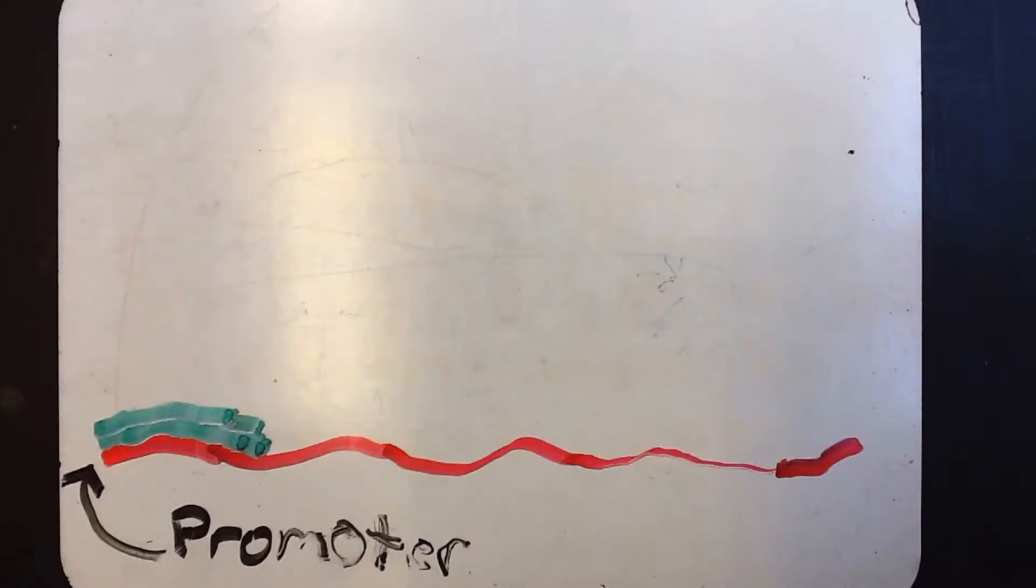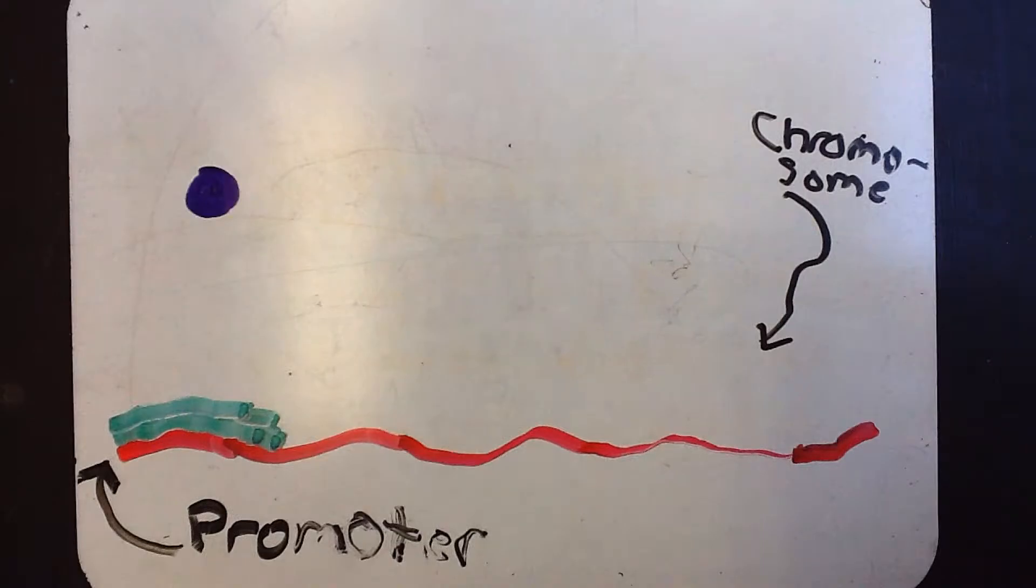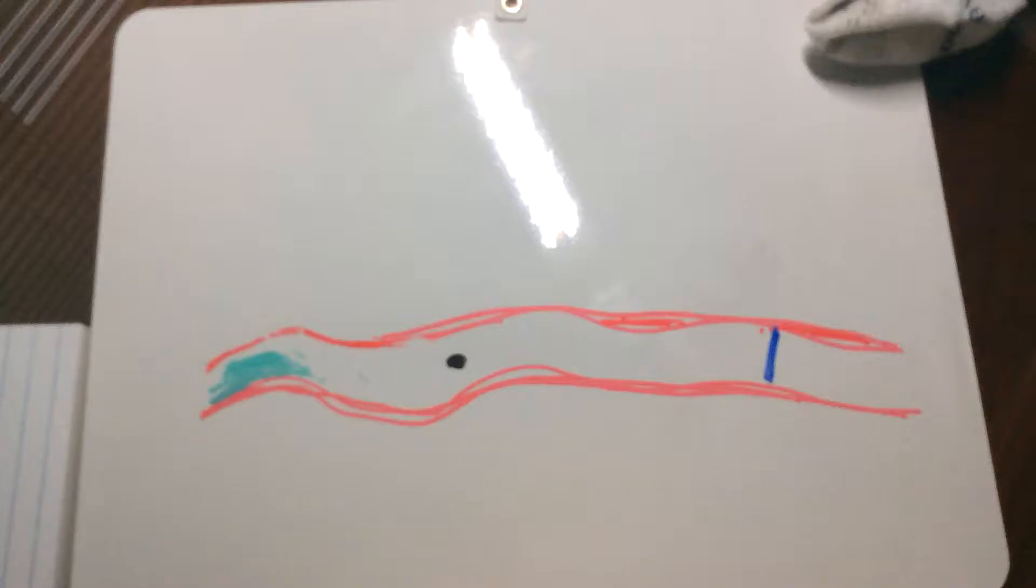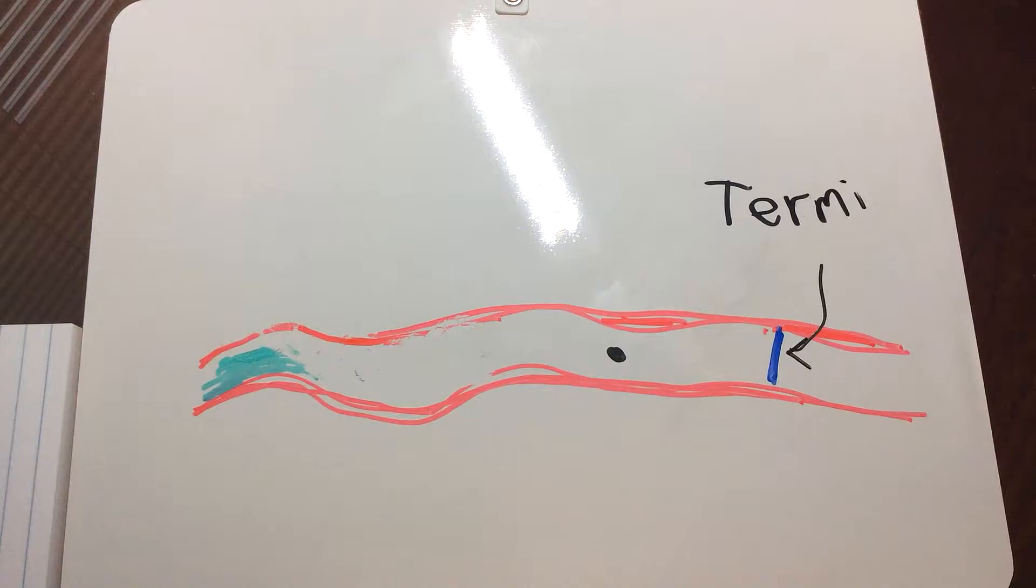Then RNA polymerase connects to the promoter on the chromosome. After that, mRNA nucleotides into the structural gene as a template and are added on by the base pair rule.